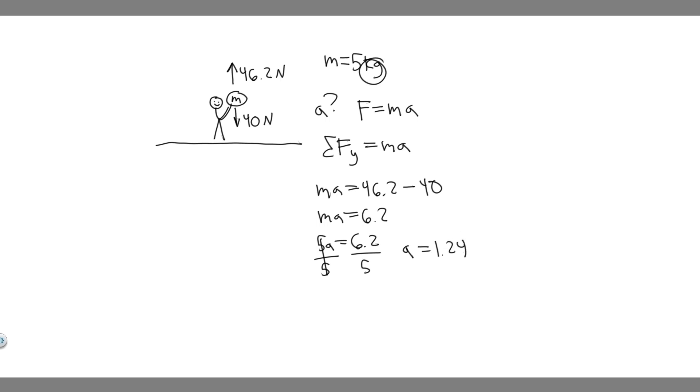So the acceleration is going to be 1.24. And then the units for acceleration, this was newtons divided by kilograms. Newtons over kilograms is just meters per second squared. So acceleration is going to be 1.24 meters per second squared.